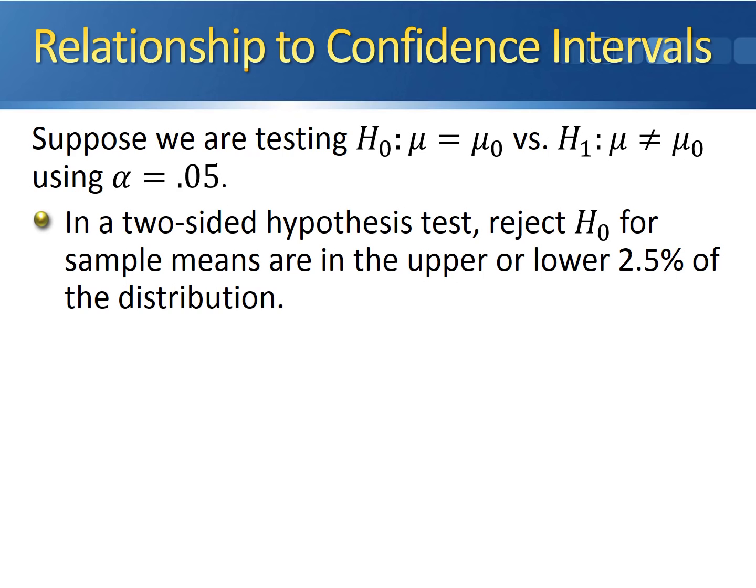This is because the area that's more extreme than that sample mean is less than 0.025, so doubling it to get the p-value would give us a p-value less than 0.05.